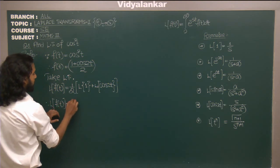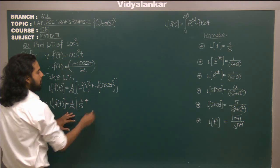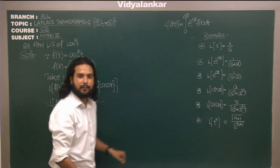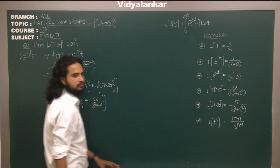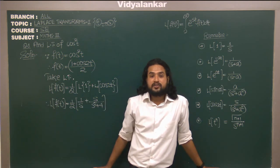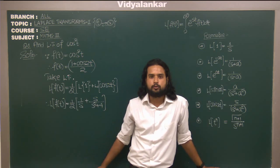So 1 by 2 goes outside and it becomes Laplace of 1 plus Laplace of cos 2t. Laplace of f of t will be half, Laplace of 1 is 1 by s, Laplace of cos 2t if I apply this formula is s upon s squared plus 4. That's the answer. This is what I wanted to tell you - basics are going to be used.